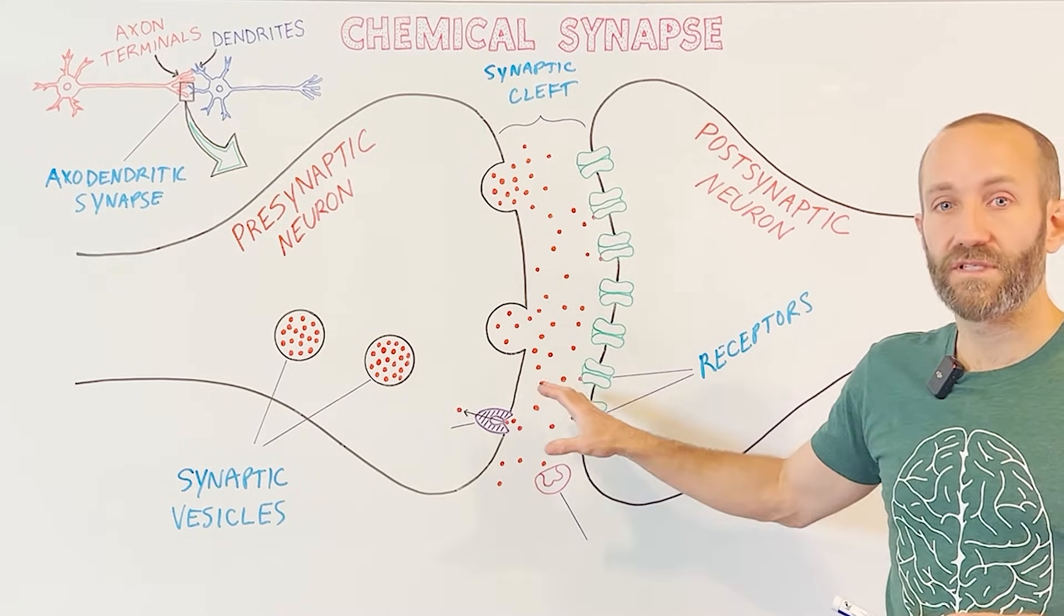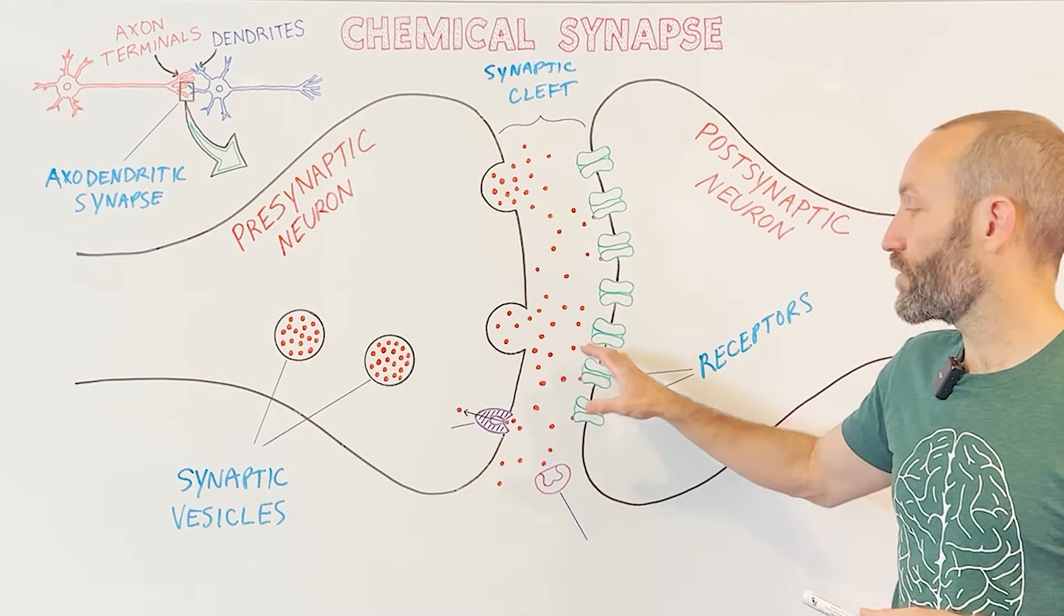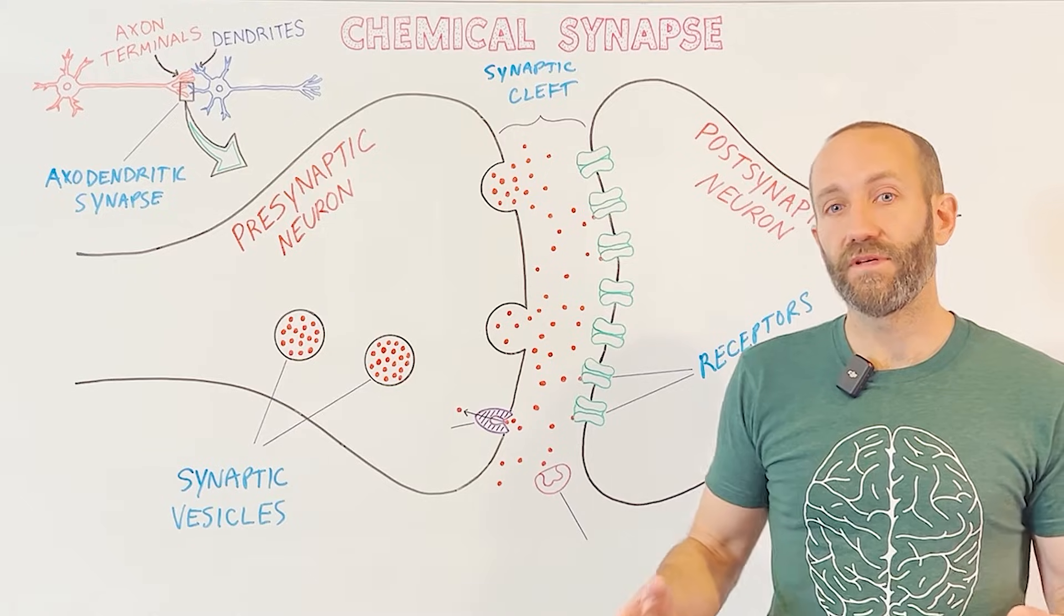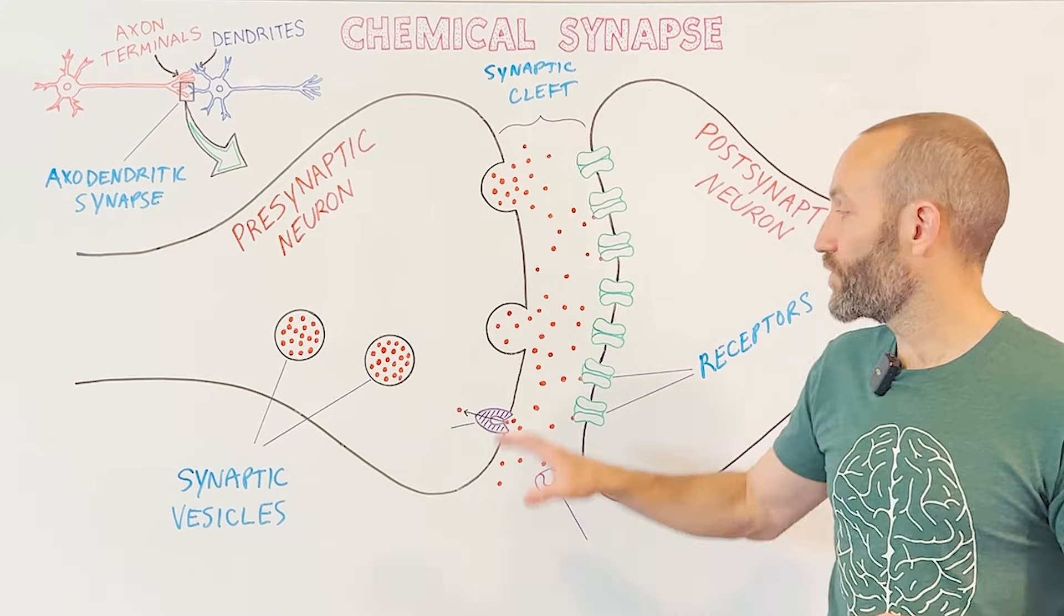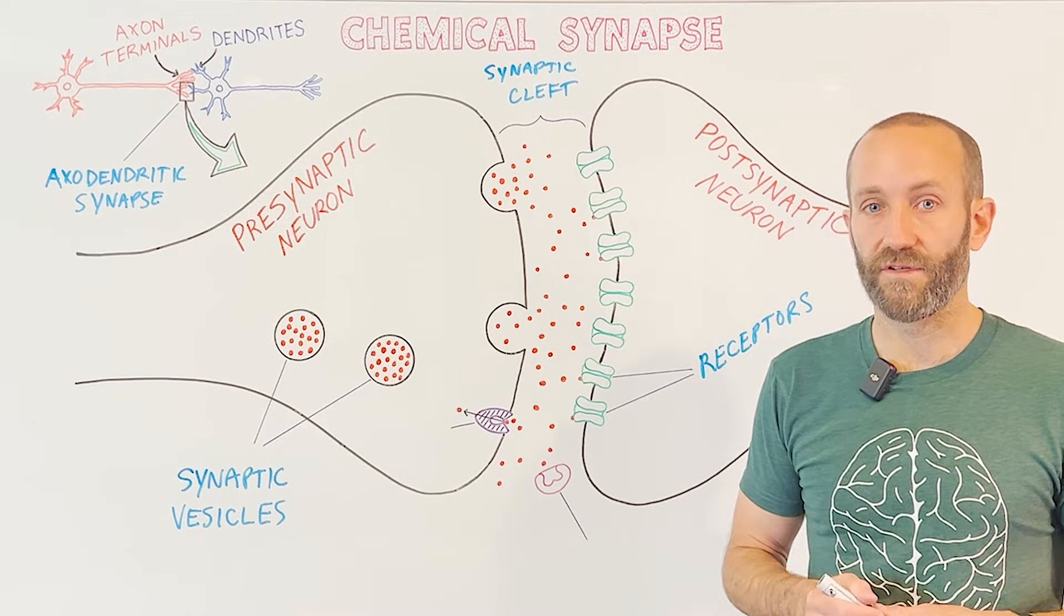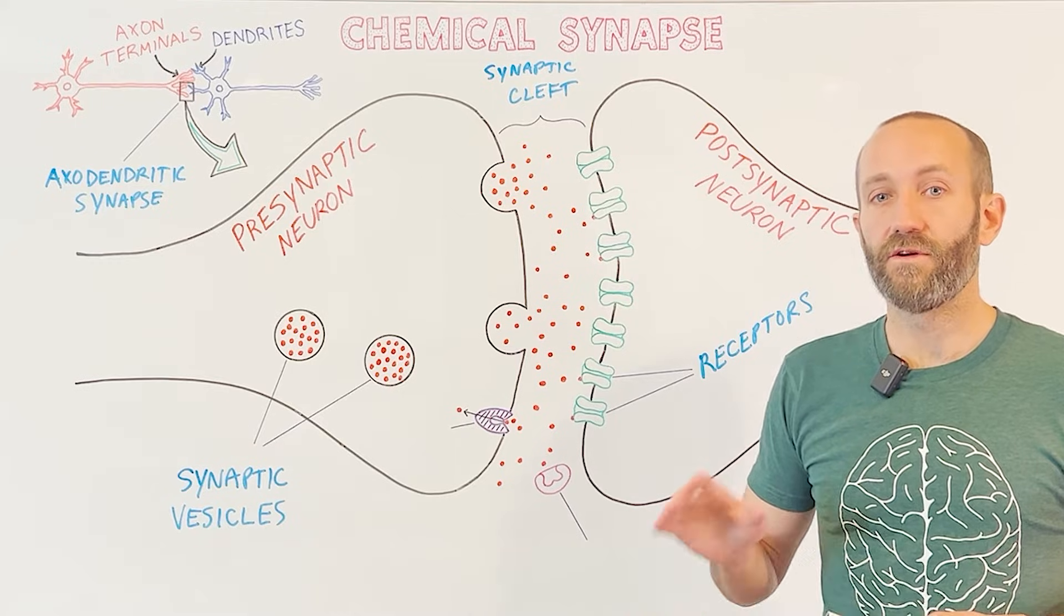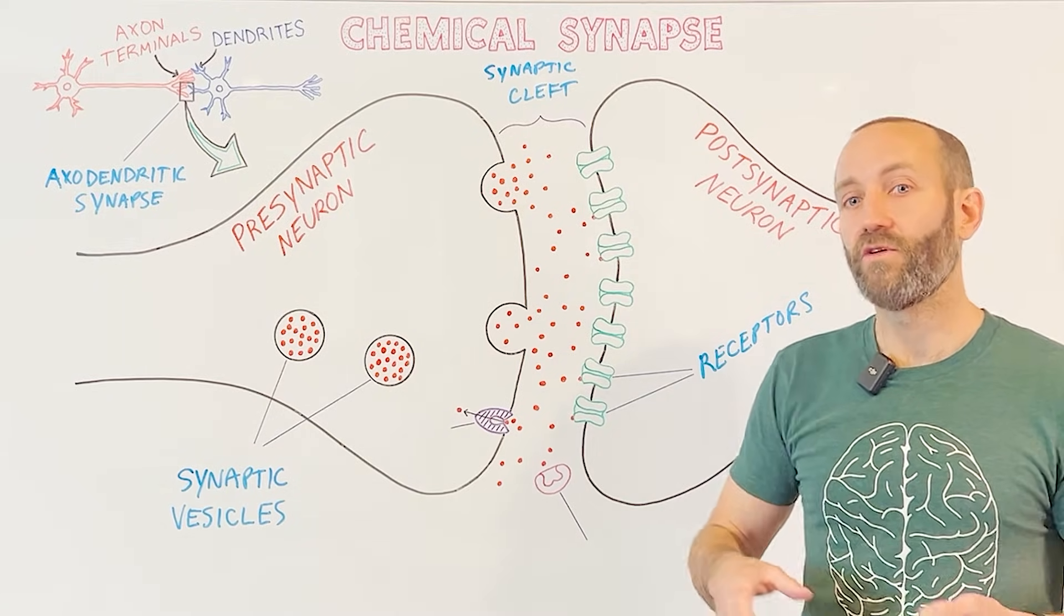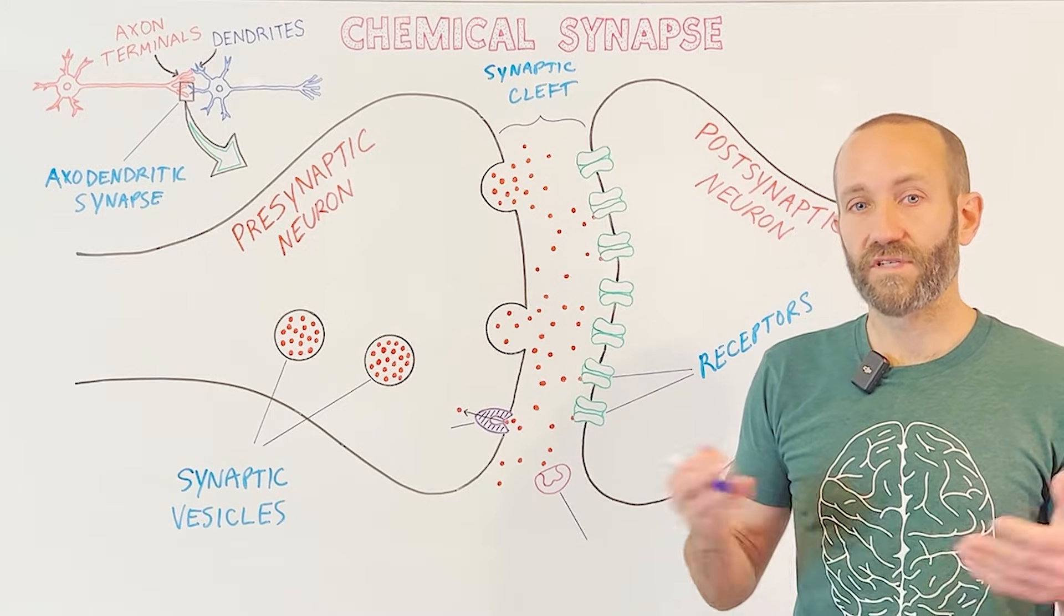After those neurotransmitters have interacted with the receptors on the postsynaptic neuron, their job of transmitting the message from one neuron to the next is done. But once that job is complete, a next important step is to remove the neurotransmitter molecules from the synaptic cleft. If this isn't done, then the neurotransmitters will continue to interact with receptors, and this continued interaction could impair the ability of the synapse to remain functional. For example, when some receptors are overstimulated, they can stop working for a period of time.